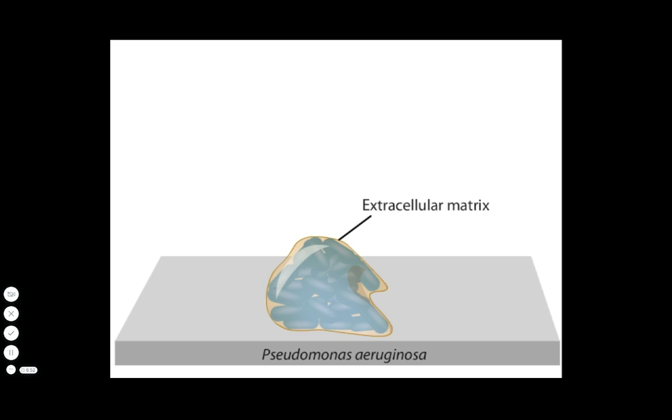Quorum sensing serves the biofilm in many ways, such as by increasing the resistance of biofilms to antibiotics. Quorum sensing in Pseudomonas aeruginosa plays a role in the maturation of the biofilm into complex three-dimensional forms, such as columns and streamers, forming channels through which nutrients flow.